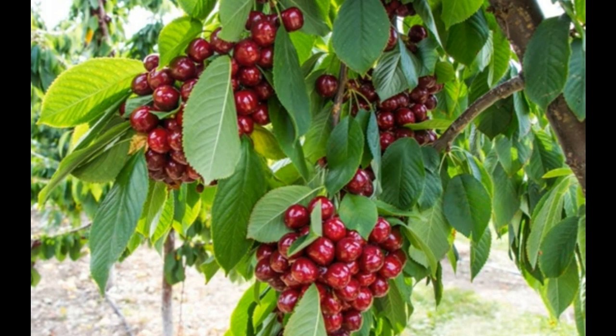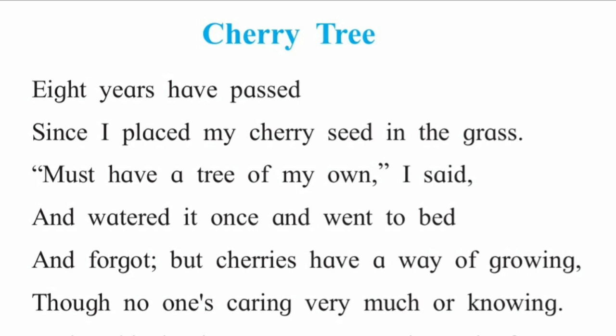Cherry Tree by Ruskin Bond. Eight years have passed since I placed my cherry seed in the grass. Must have a tree of my own, I said, and watered it once and went to bed. And forgot, but cherries have a way of growing though no one caring very much or knowing. Here the poet tells us eight years ago he had a dream to have his own cherry tree. So he sowed cherry seed in the grass, watered it once and forgot about it. In spite of the poet's carelessness, the cherry plant survived.